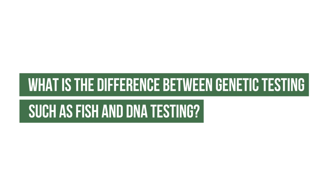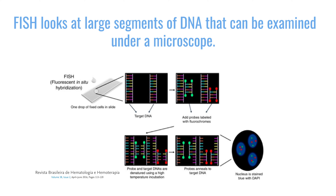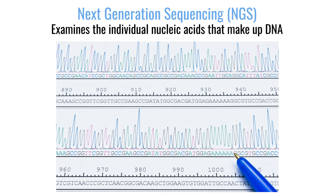What is the difference between genetic testing such as FISH and DNA testing? FISH is able to look at large segments of DNA — things that are big enough to see under a microscope. But most of the DNA is way too small to see under a microscope; it consists of nucleic acids.